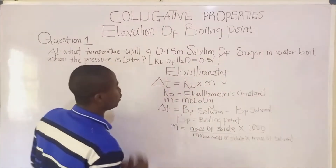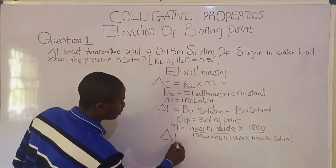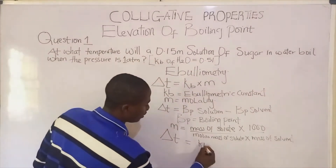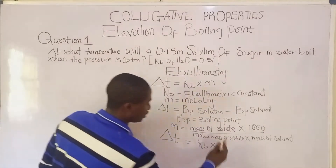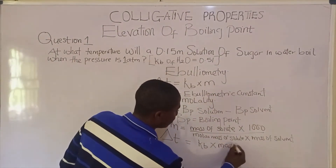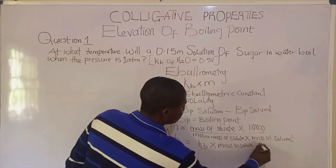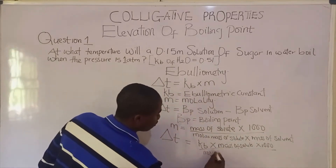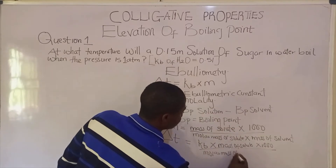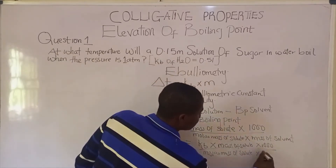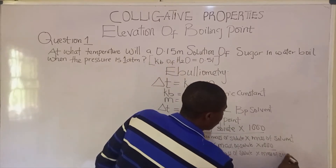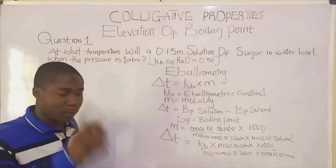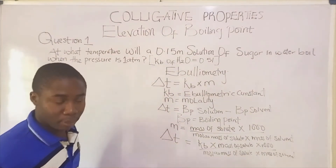Bringing the molality formula into the main equation, delta T becomes KB times the molality, which expands to: KB times mass of solute times 1000, divided by molar mass of solute times mass of solvent. This is the key formula for solving elevation of boiling point problems.